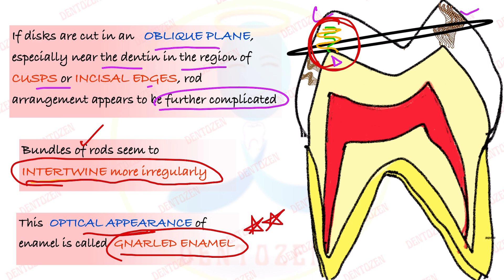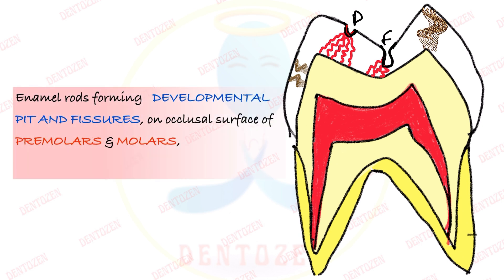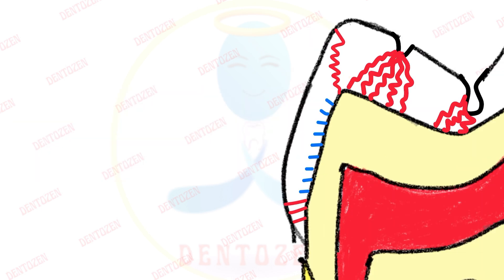What happens where the enamel surface has pits or fissures? In the case of enamel rods forming developmental pits and fissures — as on the occlusal surface of premolars and molars — the enamel rods converge towards a common point as they travel outward. So they converge in their outward course in pits and fissures.